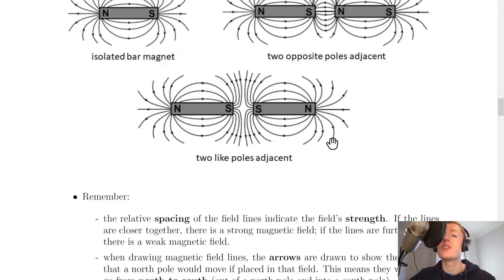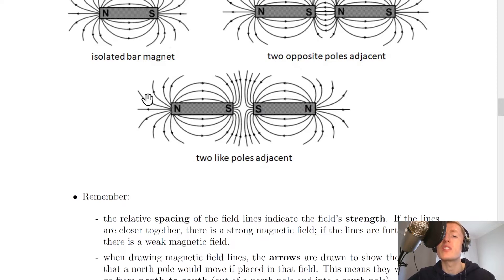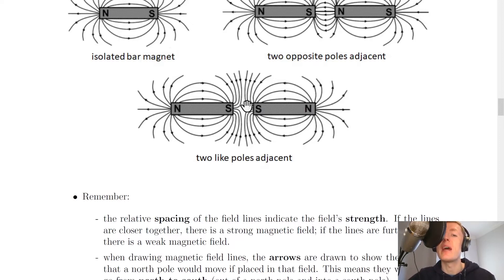Lastly, for two like poles adjacent — this could be two south poles or two north poles adjacent to each other — we have the same curved lines from north to south on either side, with lines going out of the north poles. But in the middle we have a different shape which shows that the field lines are being repelled away from each other. Because these are both south poles, we have the field lines going in towards the south poles.